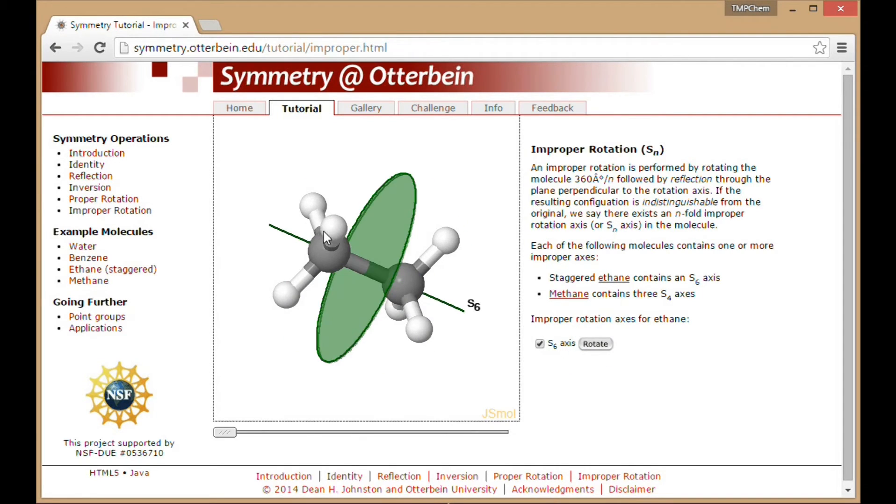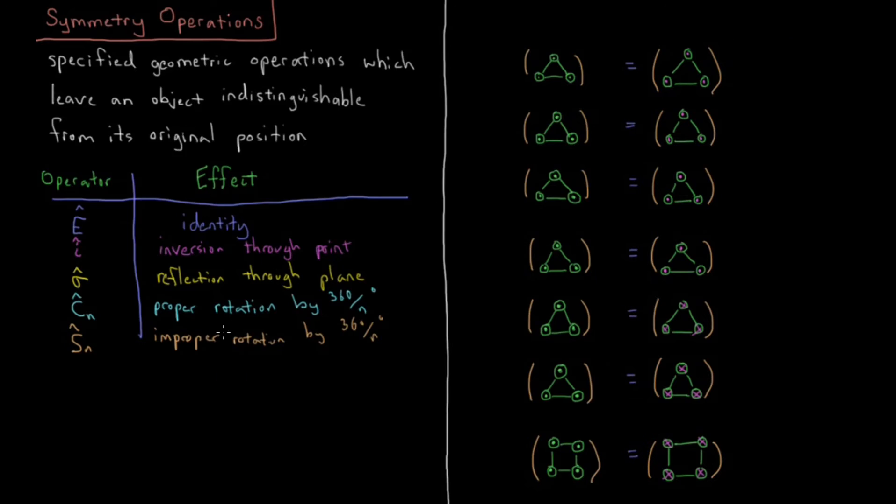So first it's going to rotate 60 degrees, and then it reflects through that mirror plane. This is the one you probably need the most practice on to see what's going on there, rotating 60 degrees around the C6, and then reflecting through a perpendicular mirror plane there. That's some of those operations in practice.